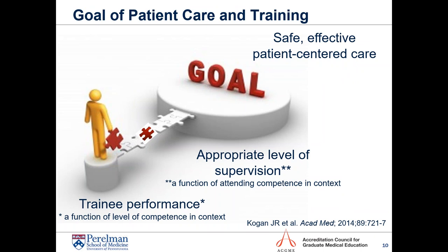If the goal is safe, effective, patient-centered care, how do we get there in training? Trainees' performance is a function of their level of competence and development, occurring within a context that must be integrated with the appropriate level of supervision. Attending faculty need to understand where the trainee is developmentally to contribute the right level of supervision, and they can only know that by watching — through direct observation.